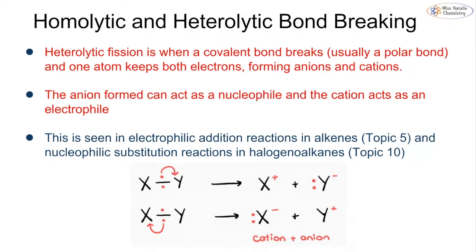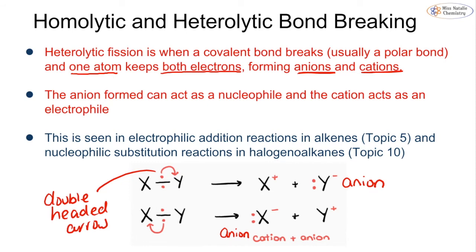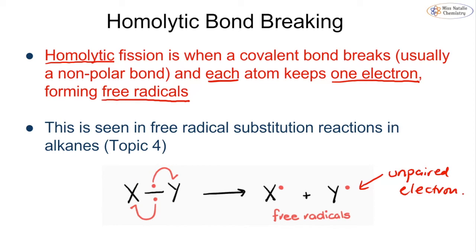The other type of bond breaking is heterolytic fission. This is when a covalent bond breaks, usually a polar bond this time, and one single atom keeps both electrons, forming an anion and a cation. These anions and cations can act as electrophiles and nucleophiles. You've seen examples with electrophilic additions in topic 5 and nucleophilic substitution reactions of halogenoalkanes in topic 10. Both electrons move in the first instance to Y, so Y becomes our anion because it's negatively charged. In the second instance, both electrons move towards X, so X becomes our anion. We have a double headed arrow showing the movement of a pair of electrons, as opposed to the single headed arrow for homolytic fission where we have one electron moving.